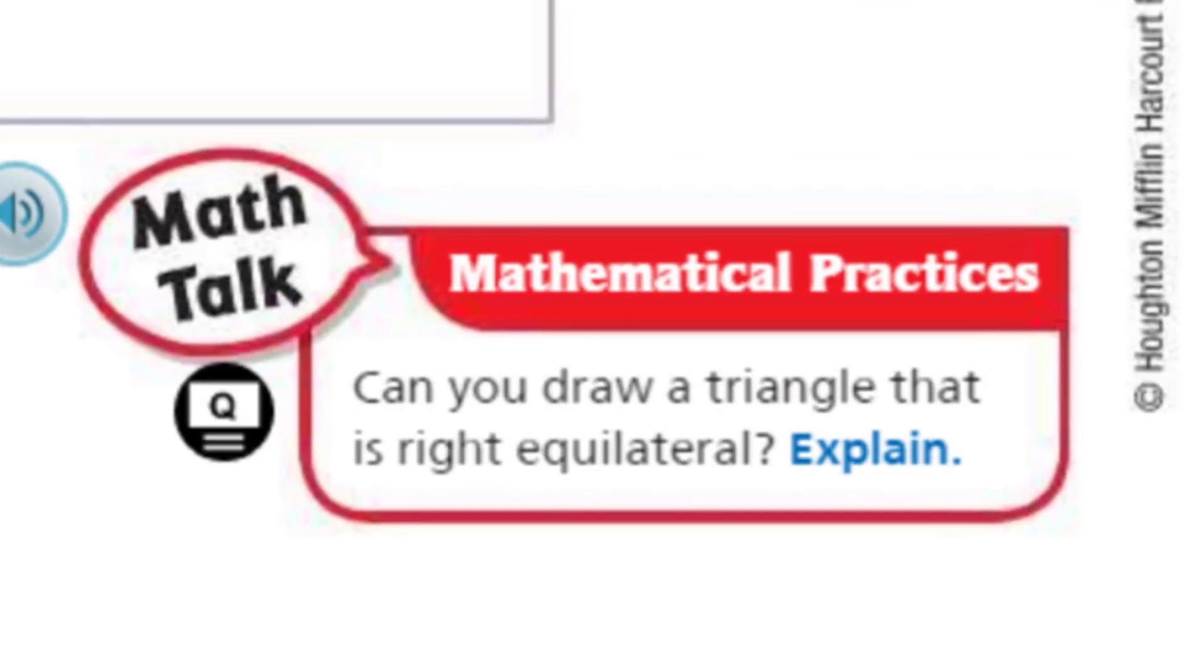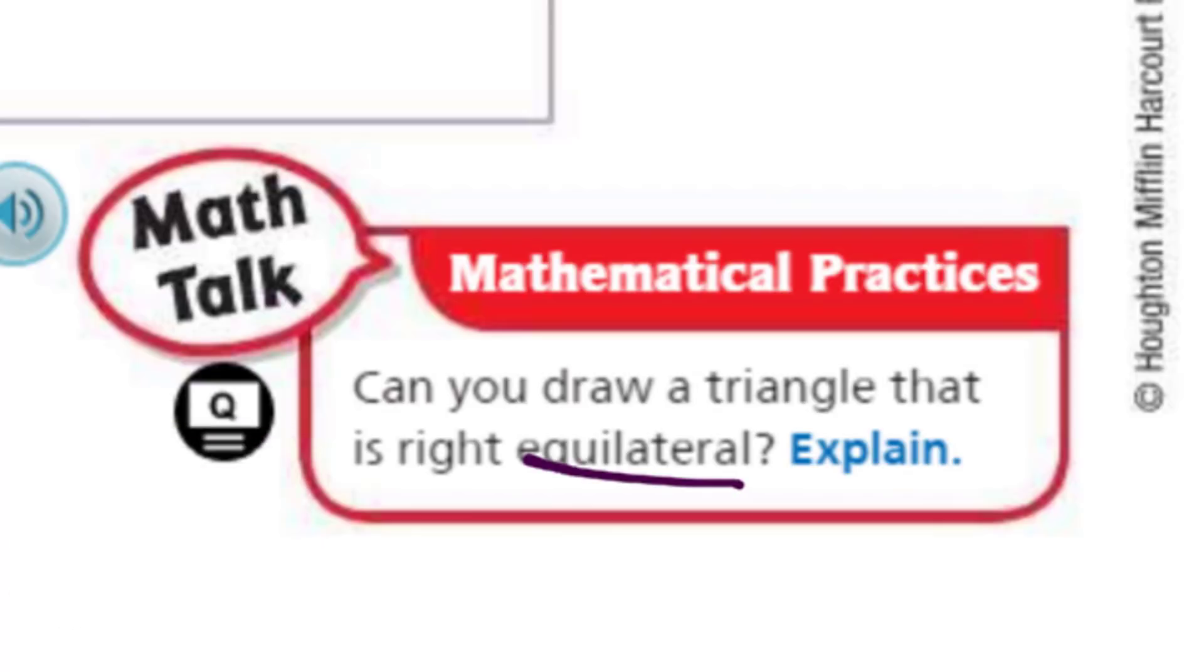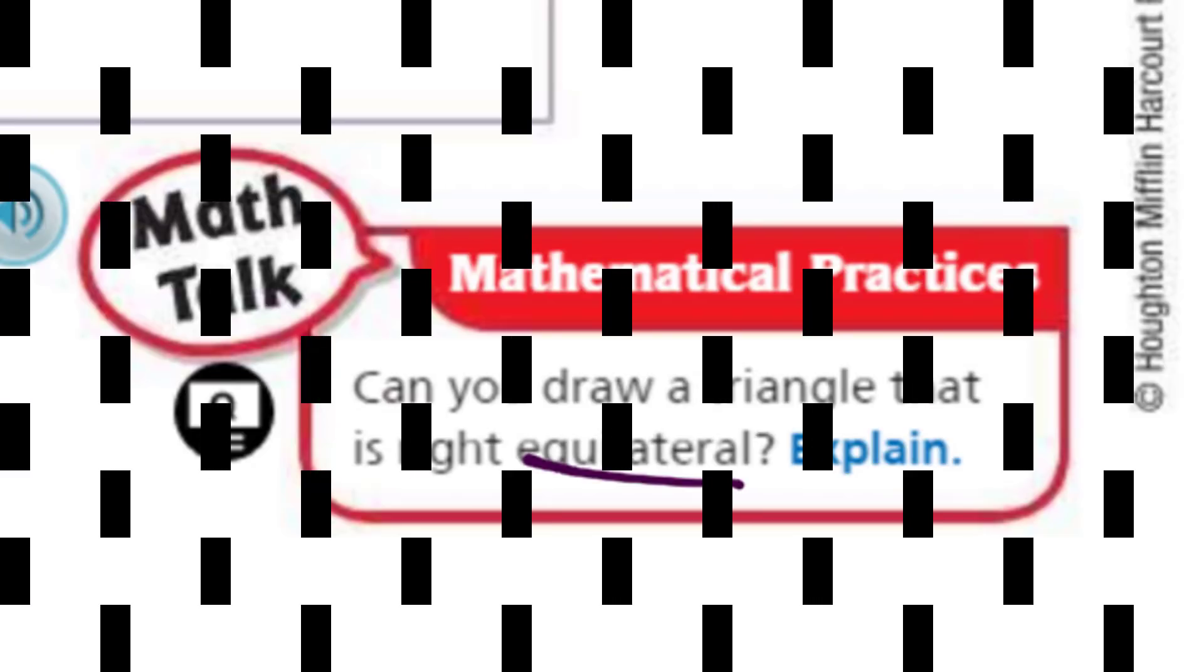So can you draw a triangle that is right equilateral? Not possible. And it's not possible because an equilateral means that all the sides are the same and all the angles are congruent. And so with a right angle, once you get that in there, you've got 90 degrees, you wouldn't be able to do it. Anyway, I know the music's playing, my friends. It's so emotional. That's right. The end of the video, my friends. It's another video. Live long and prosper.